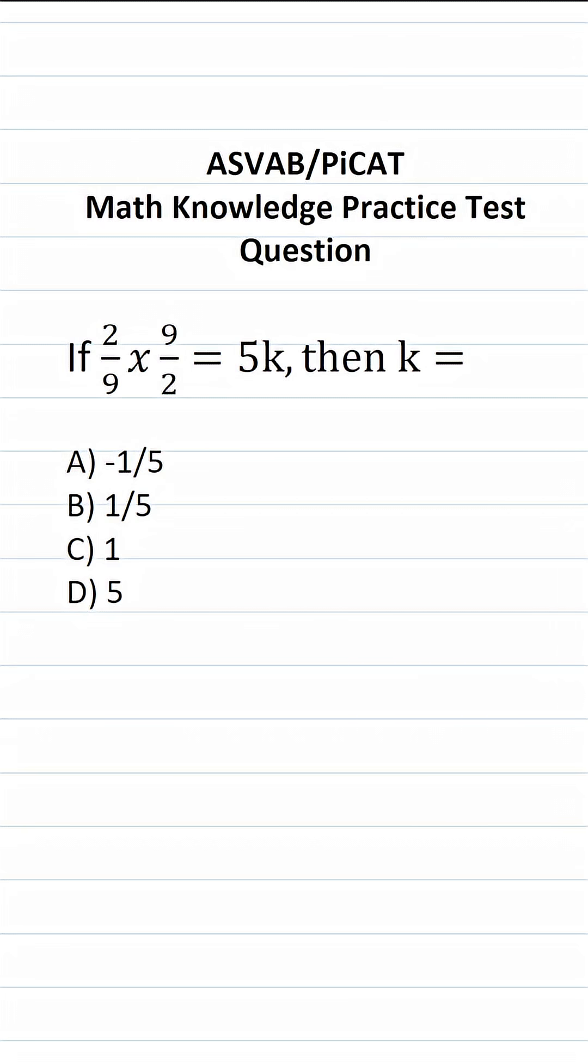This math knowledge practice test question for the ASVAB and PiCAT says if 2 over 9 times 9 over 2 equals 5k, then k equals.